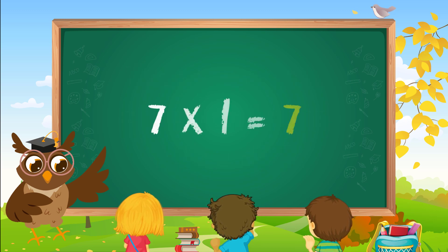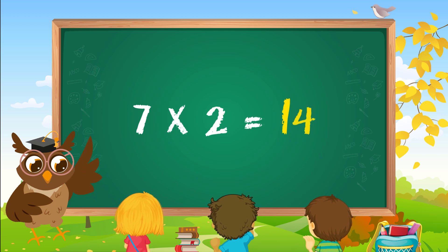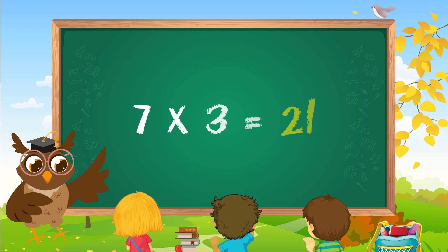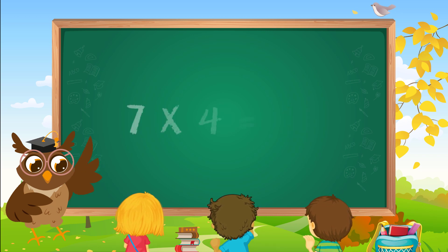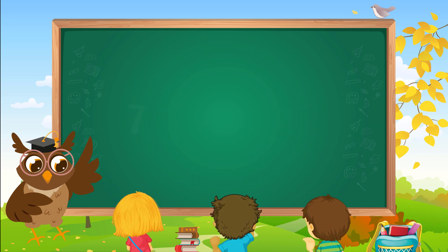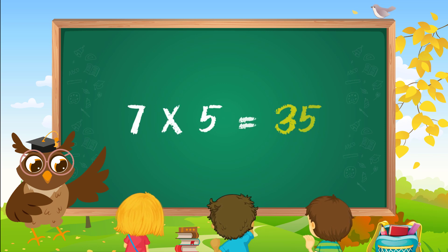Seven ones are seven. Seven twos are fourteen. Seven threes are twenty-one. Seven fours are twenty-eight. Seven fives are thirty-five.